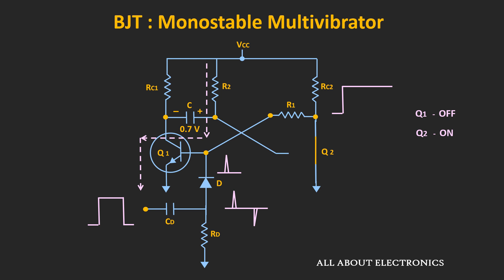As Q2 goes into saturation, the voltage at its collector becomes low — the output becomes low. Since this same voltage is applied to the base of Q1, Q1 also becomes OFF and acts as an open circuit. The circuit thus comes back into the stable state. The time for which it remains in the unstable state depends on the value of capacitor C and resistor R2.